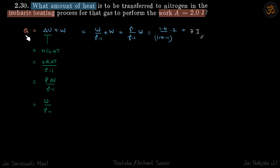So the heat Q equals W/(γ-1) plus W. This simplifies, and for a diatomic gas like nitrogen, γ is 1.4, and we get our answer.